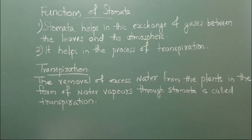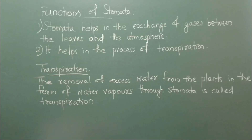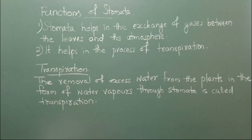The number of stomata present in a plant depends on environmental conditions, such as higher light levels, moisture, or lower carbon dioxide levels. During transpiration, plants lose a lot of water. If these plants are in a desert place, the number of stomata is less, because desert plants don't want to lose much water. That is the reason fewer stomata are present in leaves in desert places.